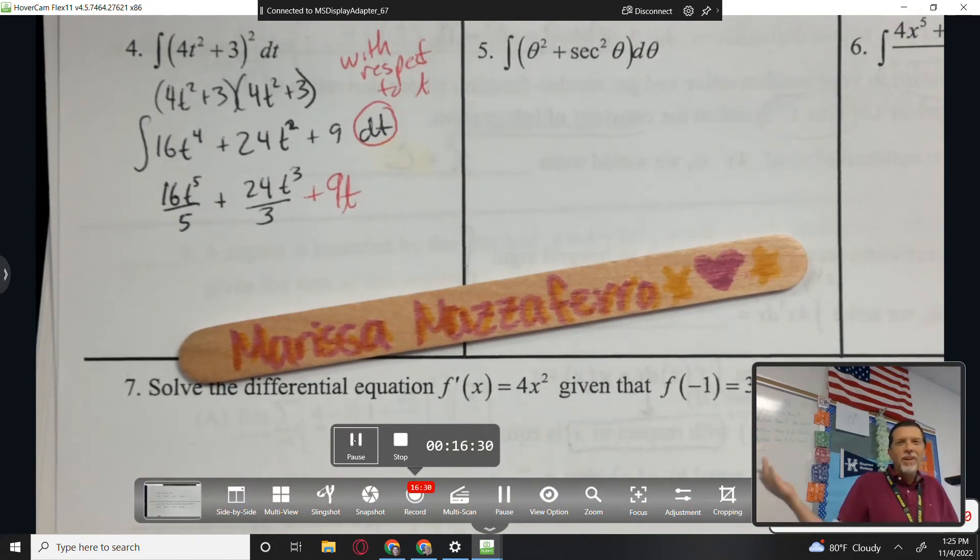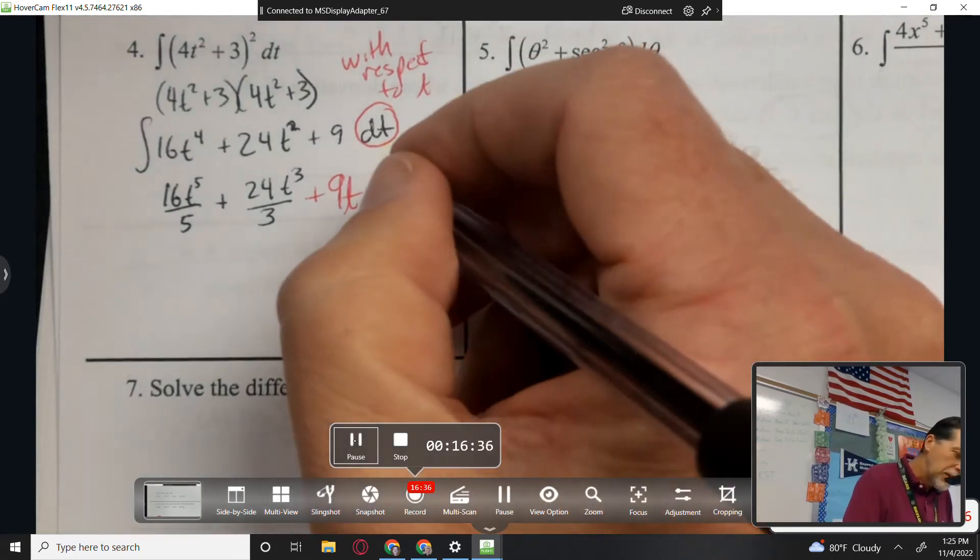Marissa, why do I have an extra popsicle stick out here? I thought we just did them all. Because you need to add the plus c. Yes. Plus c.